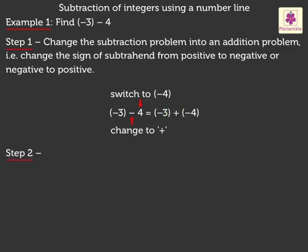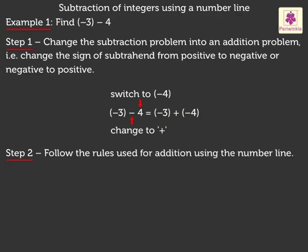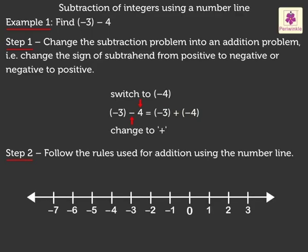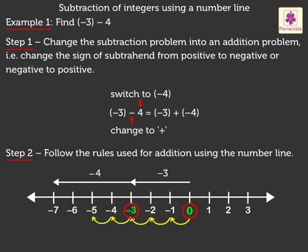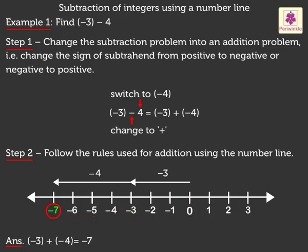Step 2: Follow the rules used for addition using the number line. Start from 0 and move 3 places to the left, i.e., in the negative direction. We have reached negative 3. From negative 3, we move 4 places again to the left and reach negative 7, which is the answer.